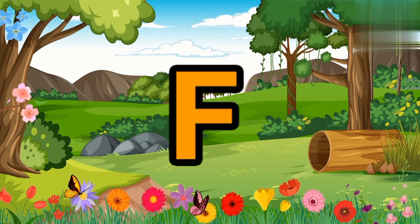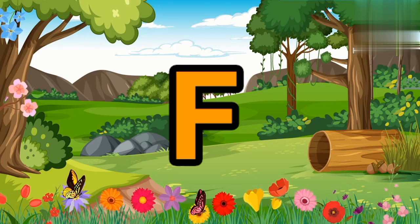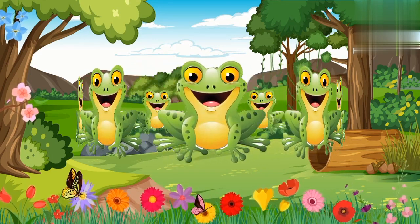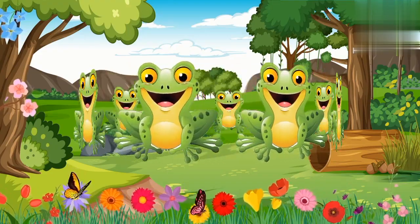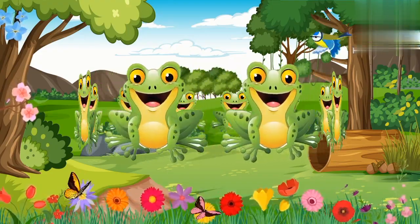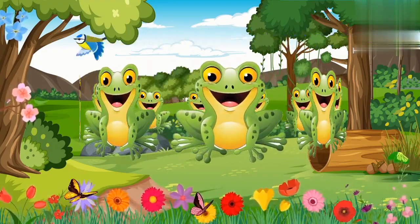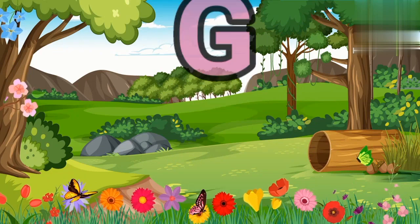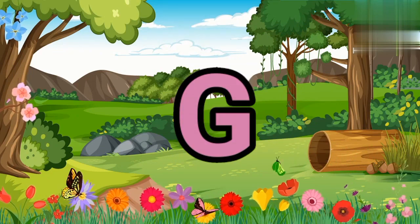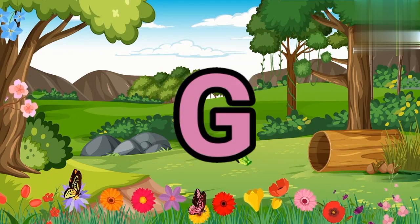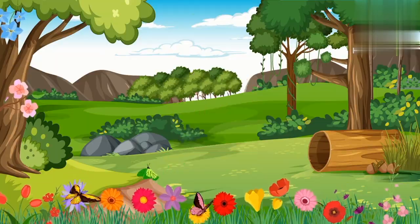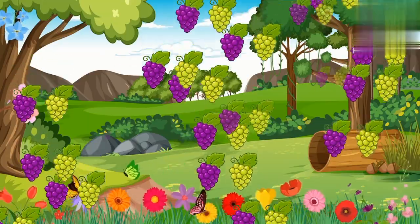M is for Mat, M-M-Mat. N is for Net, N-N-Net. O is for Orange, O-O-Orange. P is for Pet, P-P-Pet.